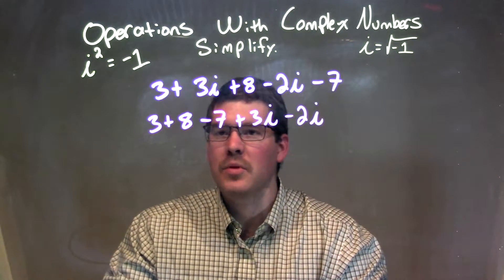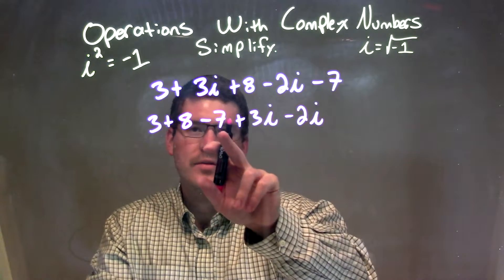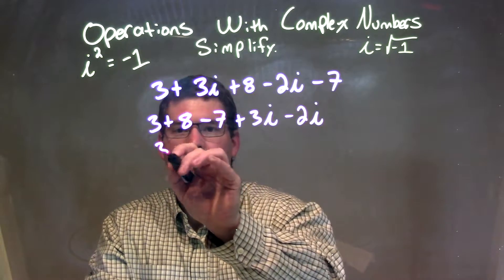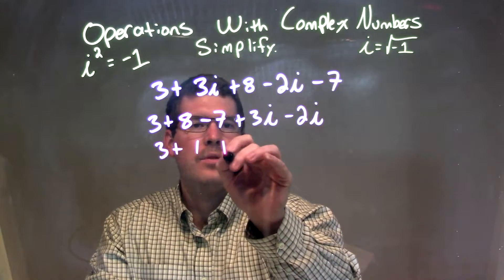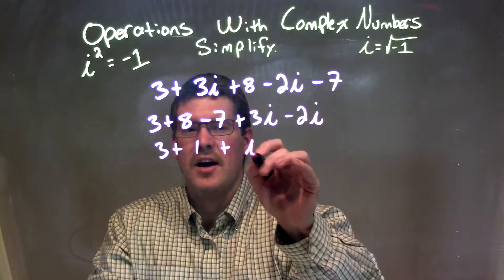Now that I've rearranged, this is pretty easy to combine them. 8 minus 7 is 1, so we have 3 plus 1, plus 3i minus 2i, just a regular i, positive 1i.